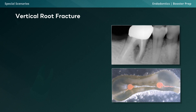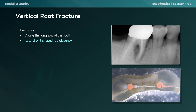Switching gears to discuss Vertical Root Fracture, starting with how to diagnose this condition. VRF occurs along the long axis of the tooth, which means we often have a lateral or J-shaped radiolucency on radiographic imaging — a hallmark finding to remember for your board exam. Sometimes vertical root fractures can be associated with a sinus tract or a severe periodontal pocket in an otherwise periodontally sound dentition. We refer to this deep isolated probing as a vertical step defect, where the probe suddenly sinks in one area. Most commonly, VRF is due to excessive condensing forces during obturation of an underprepared or overprepared canal, so VRF is a problem primarily with root canal-treated teeth.